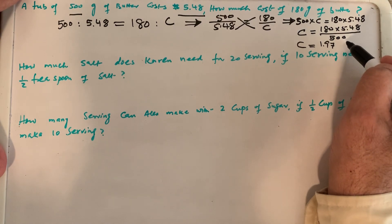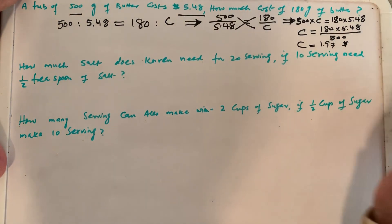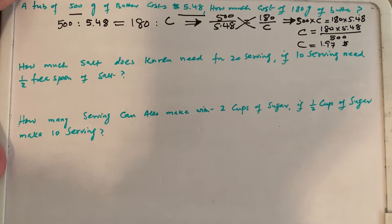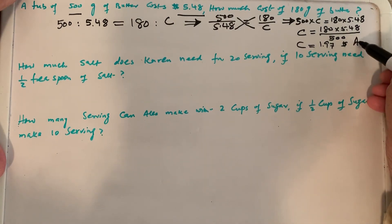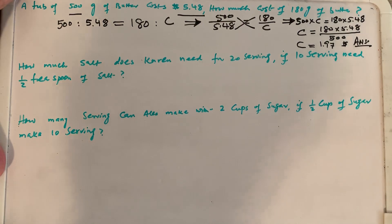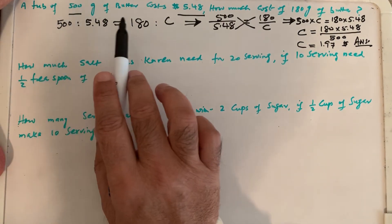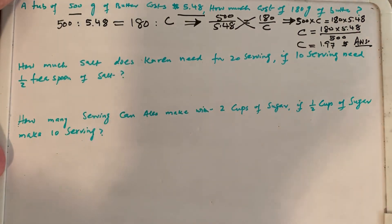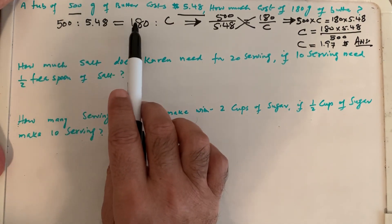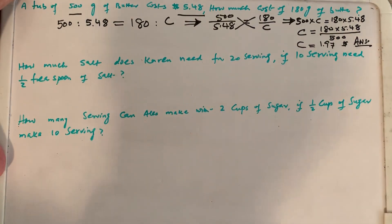So this is the cost in dollars. The question was that 500 grams of butter has a known cost of $5.48, and the cost of 180 grams of butter is $1.97. Questions can be asked in any way, but you need to understand: when you take grams first on one side of the equation, you have to take grams first on the other side as well. The ratio is the same — grams versus dollar, grams versus dollar. The new cost is $1.97.